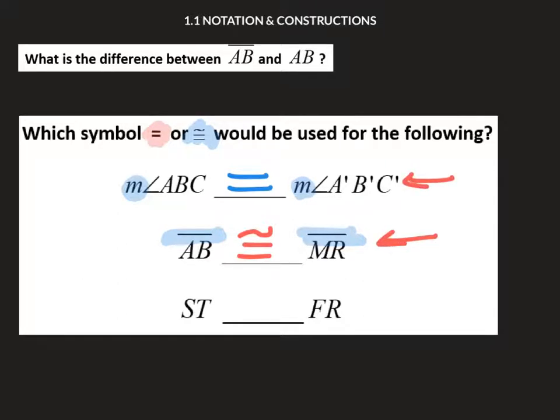The last one also is an equals relationship because this is about the measurement of ST and the measurement of FR. Congruence would not be the right way to write this.